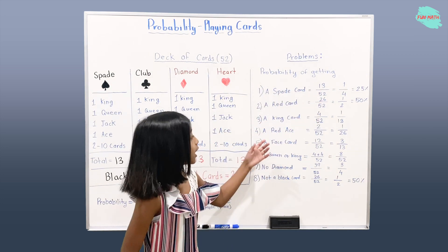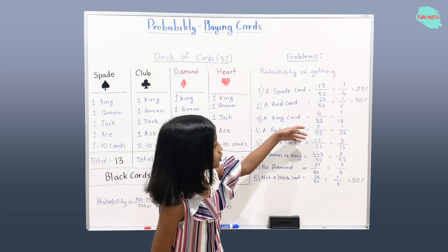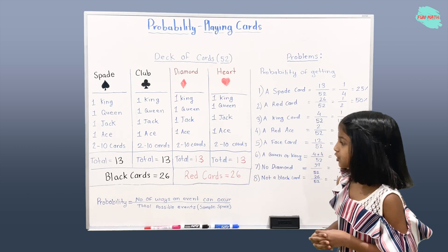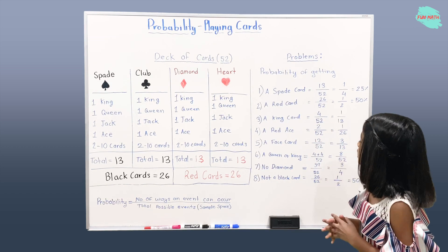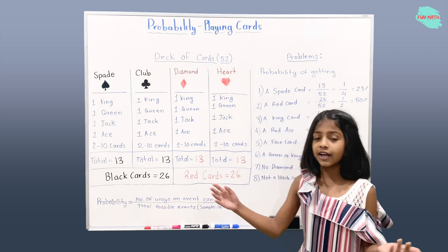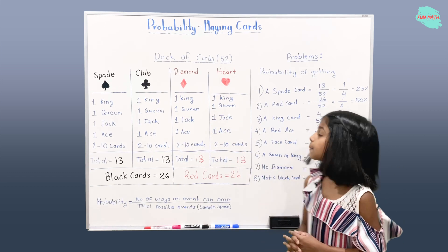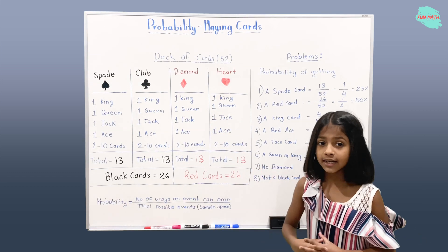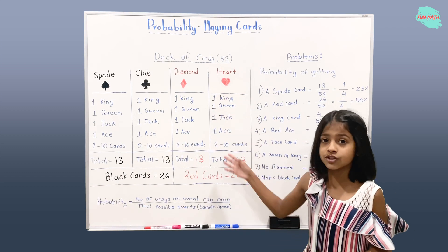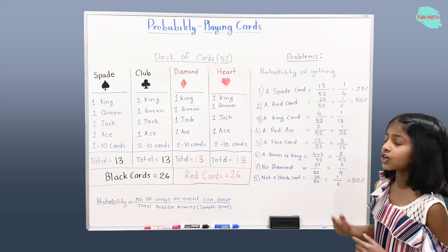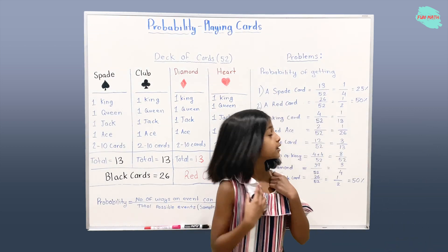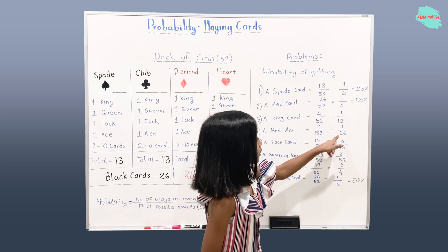Probability of getting a red ace is 2 over 52. We have 2 as our numerator because there are only 2 red aces — 1 from diamond suit and 1 from heart suit. 2 over 52 can also be 1 over 26.